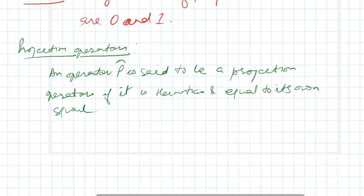So mathematically, I can say that P dagger equals P, and P squared equals P.